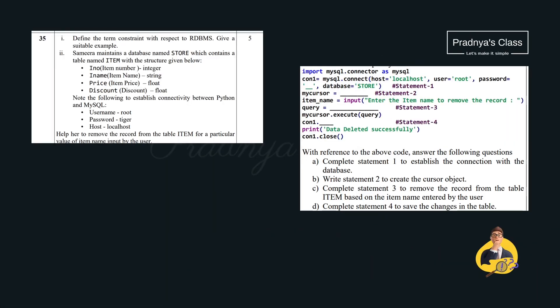For more practice, let's consider one more question which is for 5 marks. Question A: complete statement 1 to establish the connection with the database — the password is missing, and the mentioned password is 'tiger', so we write tiger there. Question B: write statement 2 to create the cursor object. We know how to create a cursor object — we write con1.cursor().